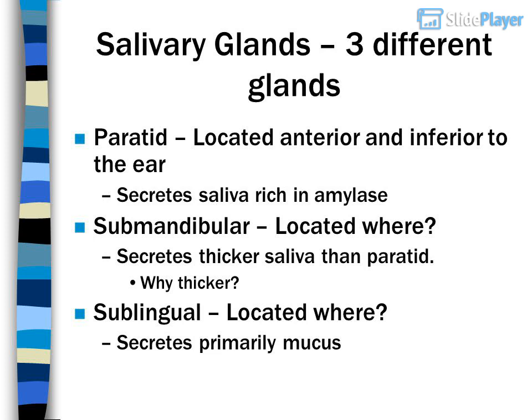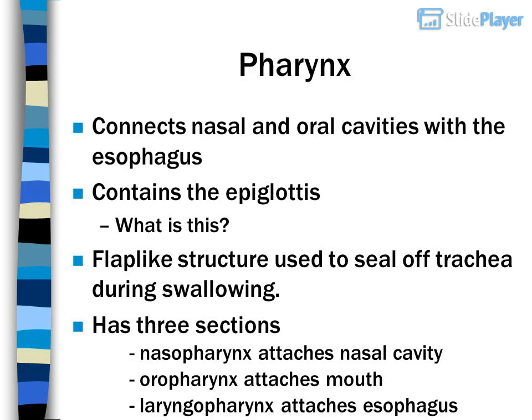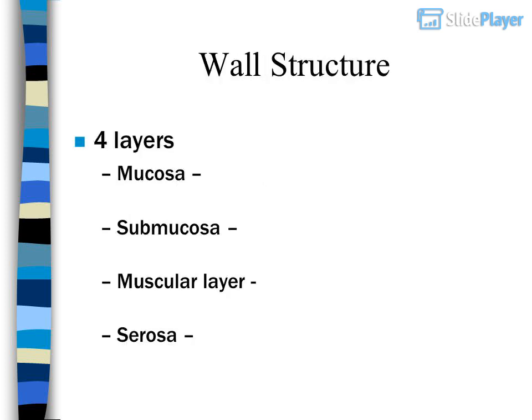The sublingual gland secretes primarily mucus. The pharynx connects the nasal and oral cavities with the esophagus. It contains the epiglottis — what is this? A flap-like structure used to seal off the trachea during swallowing. The pharynx has three sections: nasopharynx, which attaches to the nasal cavity.